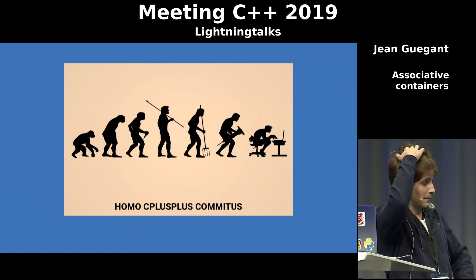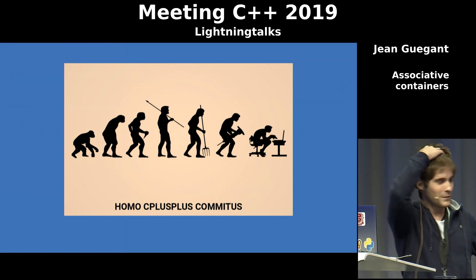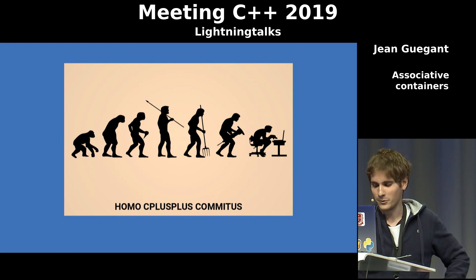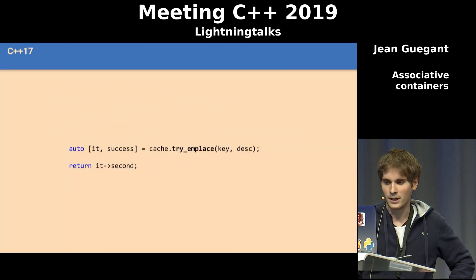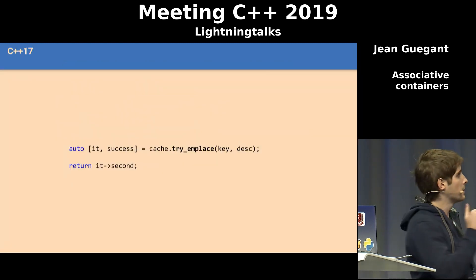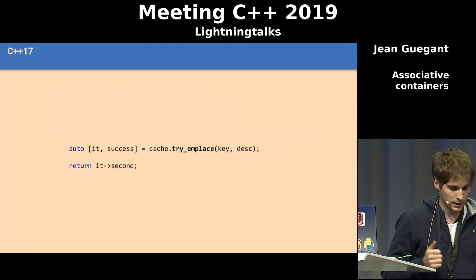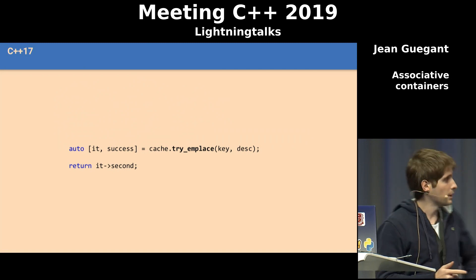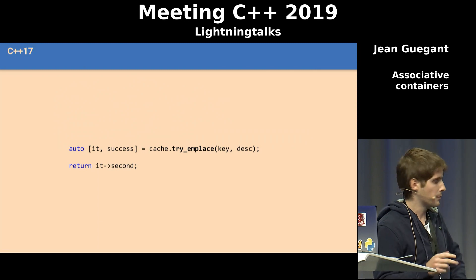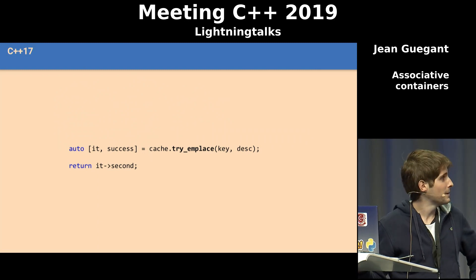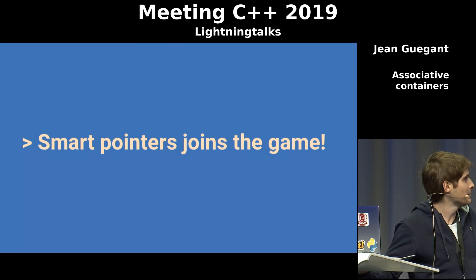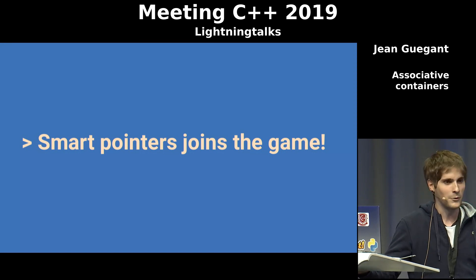So after 20 years of evolution, the C++ committee finally came up with a solution: try_emplace. And try_emplace is beautiful. It is solving the conditional insertion, and you don't have to pay any cost upfront. Is it good? Of course not — it's not good enough. It doesn't work very well with smart pointers.